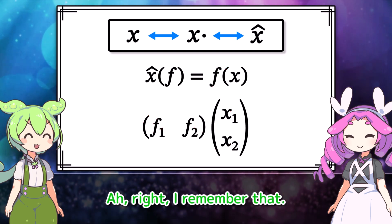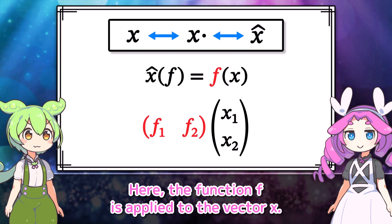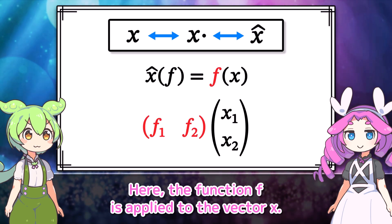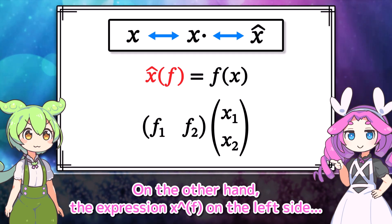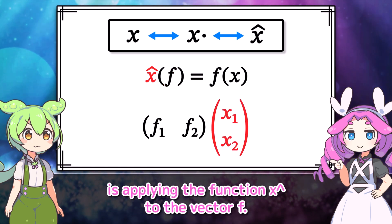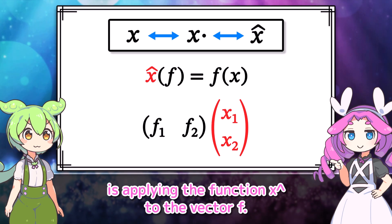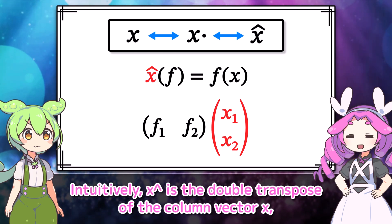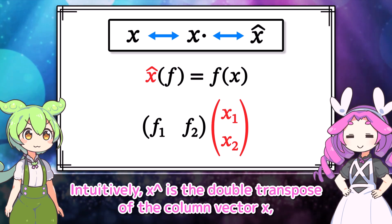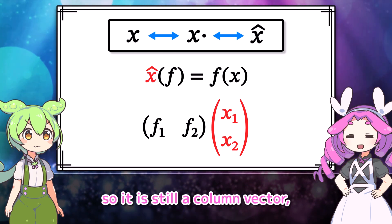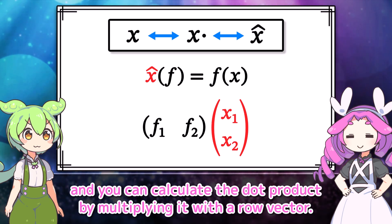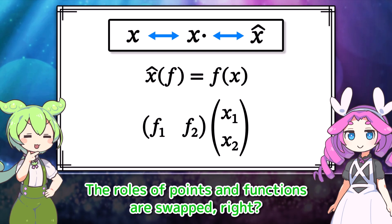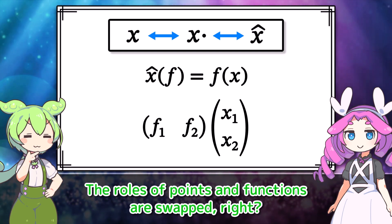Right, the function f is applied to the vector x. On the other hand, the expression x-hat of f is applying the function x-hat to the vector f. Intuitively, x-hat is the double transpose of the column vector x, so it is still a column vector. And you can calculate the dot product by multiplying it with a row vector. So the roles of rows, dots, and functions are swapped.